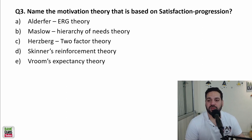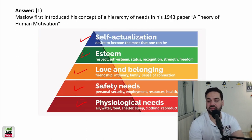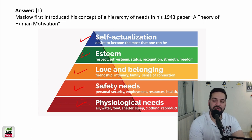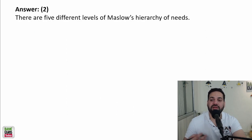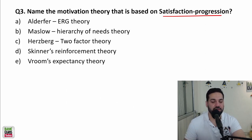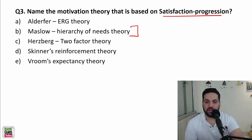Which motivation theory is based on satisfaction progression? This theory proceeds in phases: physiological needs are most important, followed by safety, then love and belongingness, then esteem, and then self-actualization needs. It is in a phased, hierarchical manner based on satisfaction — Maslow's hierarchy of needs theory.